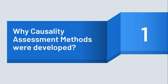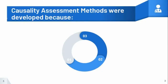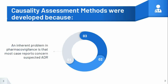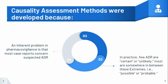Let's first see why causality assessment methods were developed. Causality assessment methods were developed because an inherent problem in pharmacovigilance is that most case reports concern suspected ADRs. Adverse reactions are rarely specific for the drug, diagnostic tests are usually absent, and a re-challenge is rarely ethically justified. In practice, few adverse reactions are certain or unlikely — most are somewhere in between, meaning possible or probable. Also, for years, causality assessment was completely dependent on expert judgment, which depends on the knowledge and experience of each expert, hence there is high possibility of disagreement and inter-individual variability.